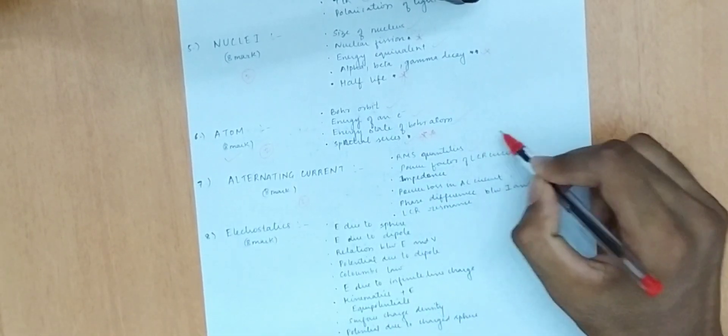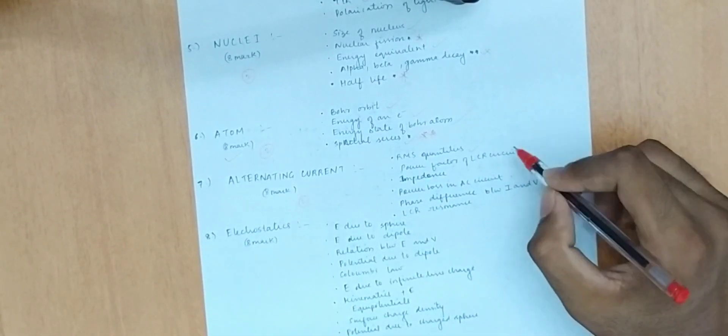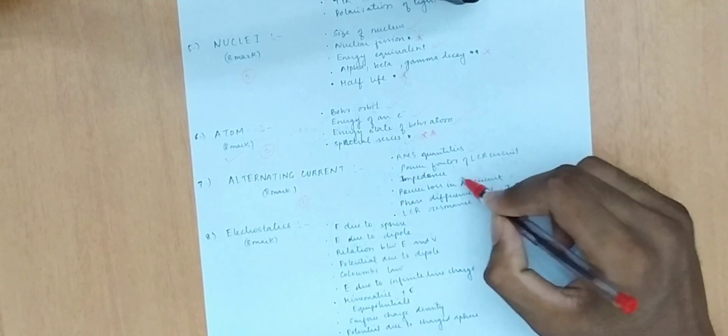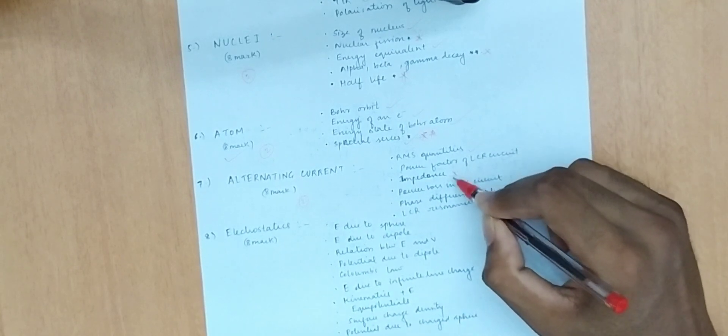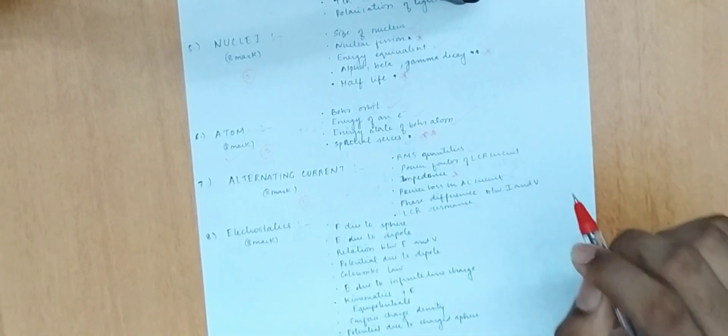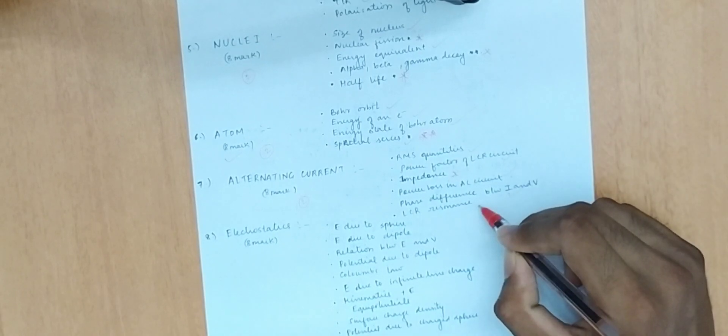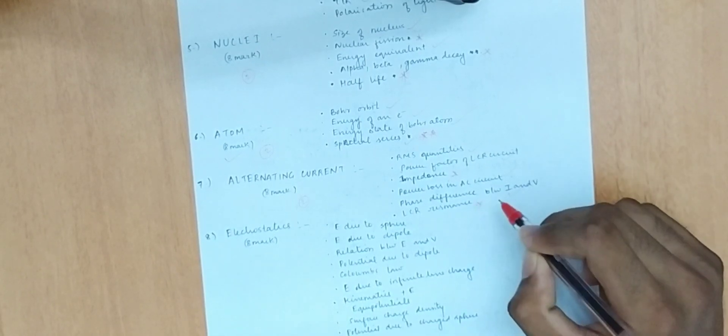For alternating currents, important topics are RMS quantities, power factor of LCR, power loss, phase difference between current and voltage in LCR, and resonance.